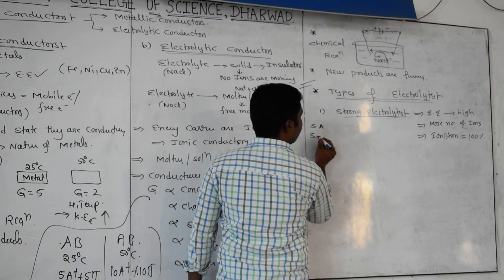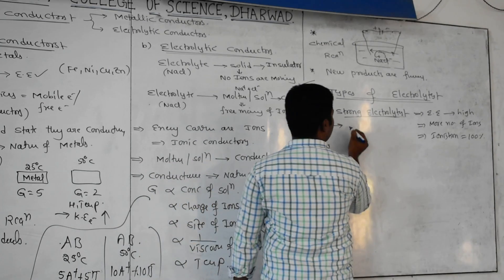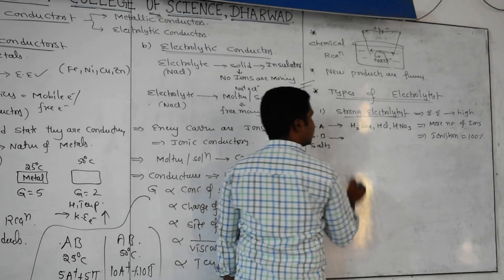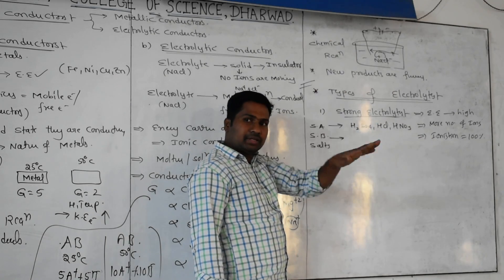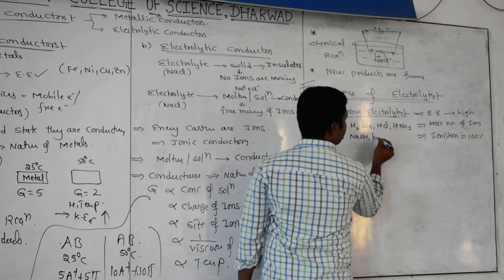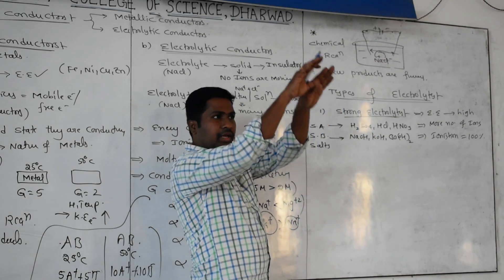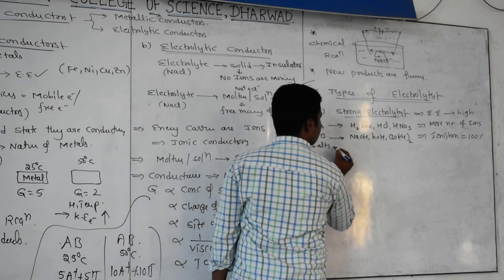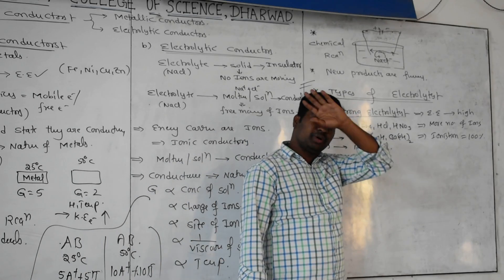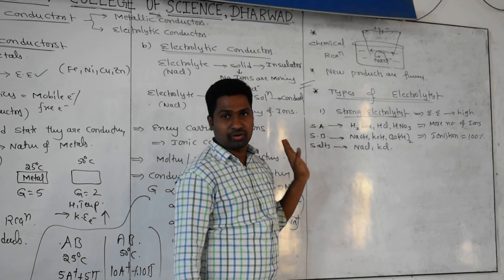Strong electrolytes include: strong acids - all inorganic acids like H2SO4, HCl, and HNO3; strong bases - first group element hydroxides like NaOH and KOH, and barium hydroxide from the second group; and salts like NaCl and KCl. Whatever amount you take will completely undergo ionization, giving more ions and more power passing through.